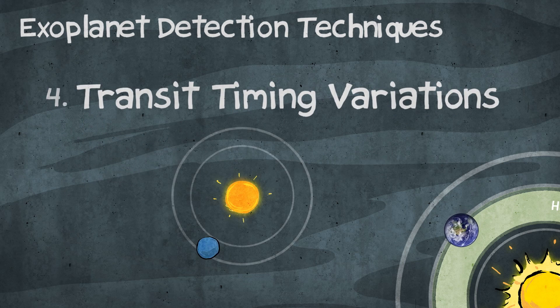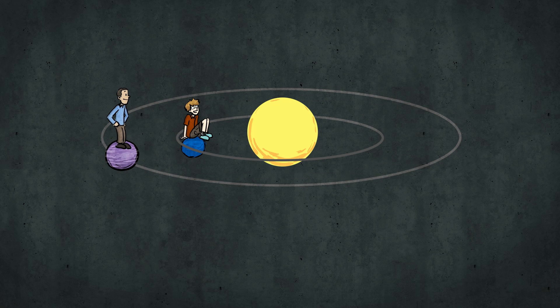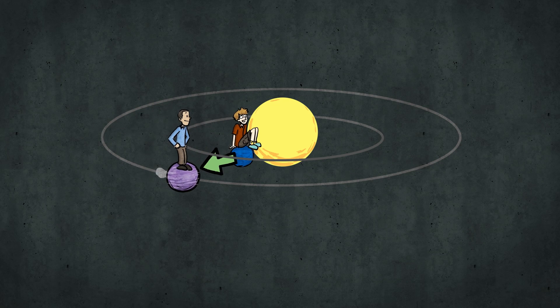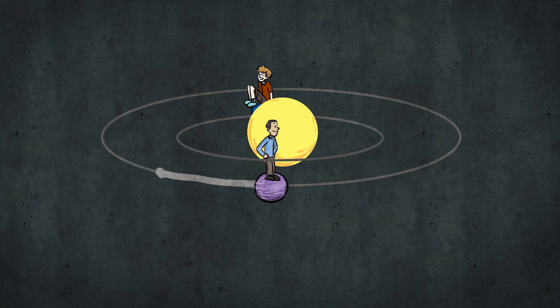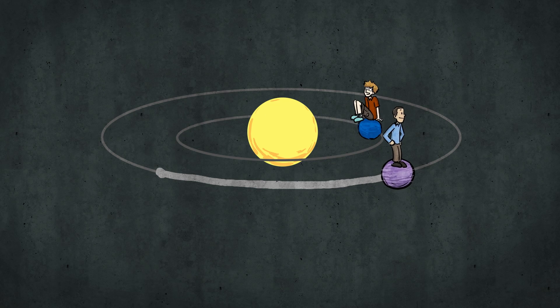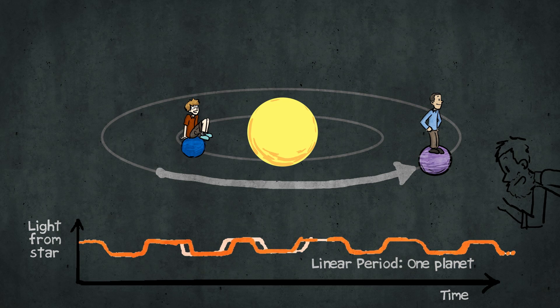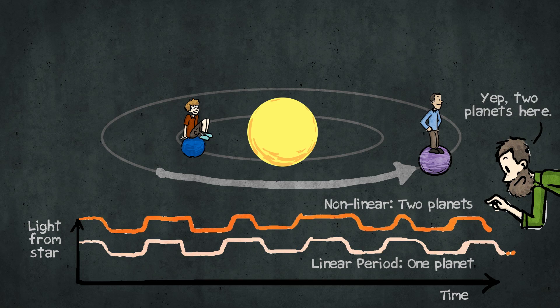So we talked about transits here. And we have a star with a planet going around it. The planet has a very regular orbit. So now let's say we have a second planet in here. So the outer planet can tug on the inner planet and cause it to arrive late to its transit. And then a little bit later, it's ahead of it and it pulls it forward and it causes it to arrive early for its transit. So you actually see a non-linear period. Then you can say beyond any reasonable doubt that you have two planets here.